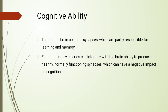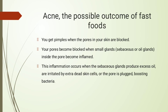The effect of fast food on cognitive ability: the human brain contains synapses which are partly responsible for learning and memory. Eating too many calories can interfere with the brain's ability to produce healthy, normal-functioning synapses, which can have a negative impact on cognition.